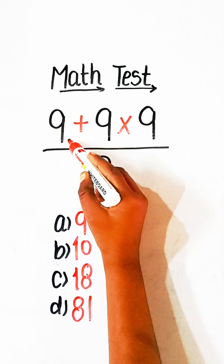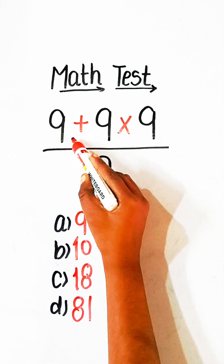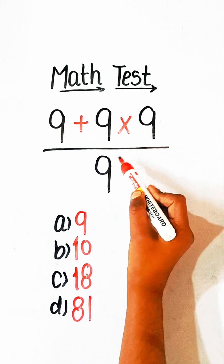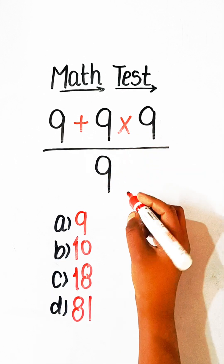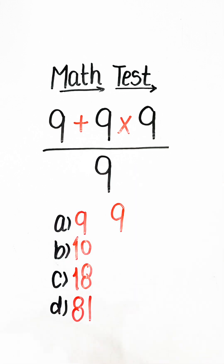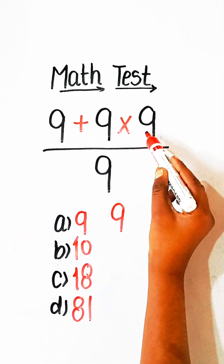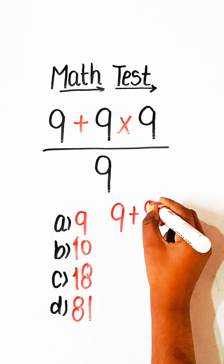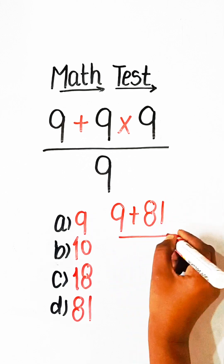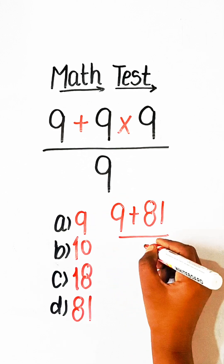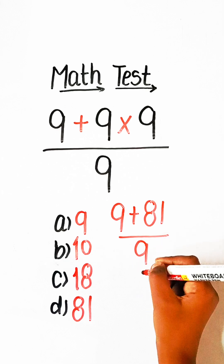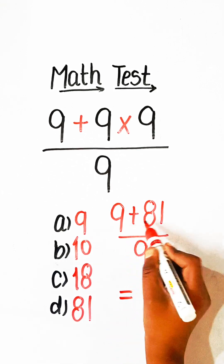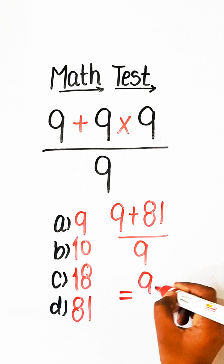We have 9 + 9 × 9 over 9. We will multiply first: 9 × 9 is 81. So we have 9 + 81 over 9. 9 + 81 is 90, divided by 9 equals 10.